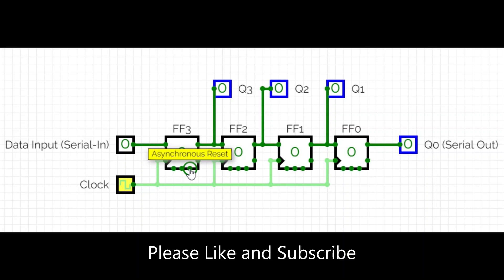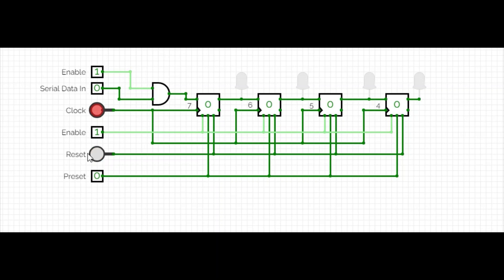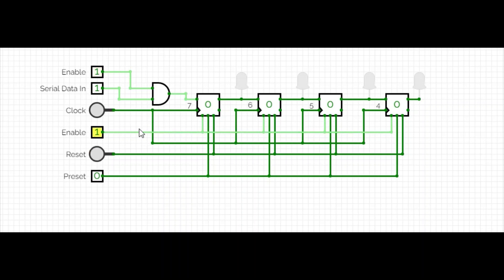Now we didn't apply the asynchronous reset, preset, and enable in the previous circuit. Let's do that now. Let me reset the clock. In this circuit I used LEDs. This is also a D flip-flop. In the previous circuit I didn't apply any asynchronous commands — enable and preset. Here I have applied them. Reset is already connected. This is the preset — we won't use it right now. If you make enable zero, and you change the input and apply the clock, you see no LED is glowing. You have to make the circuit enabled.